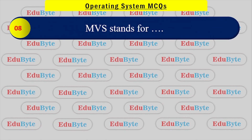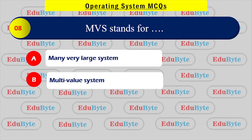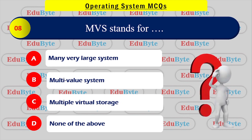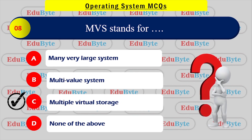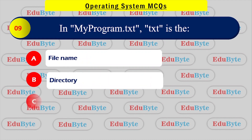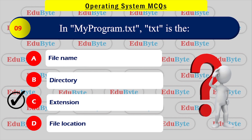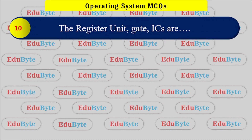What does MVS stand for? Options: Many Very Large System, Multi-Value System, Multiple Virtual Storage, None of the above. The correct answer is Multiple Virtual Storage. Next question: In 'program.txt', what does '.txt' represent? Options: file name, directory, extension, file location. The correct answer is extension — .txt is the file extension.